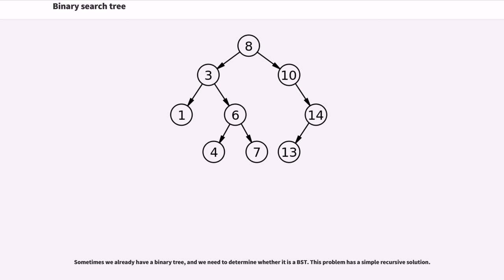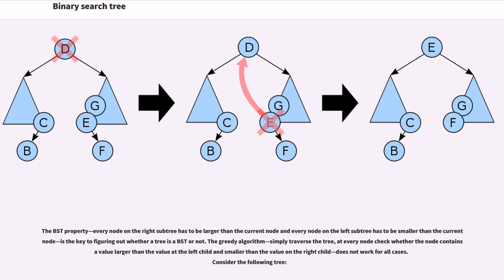Sometimes we already have a binary tree and we need to determine whether it is a BST. This problem has a simple recursive solution. The BST property, every node on the right subtree has to be larger than the current node and every node on the left subtree has to be smaller than the current node, is the key to figuring out whether a tree is a BST or not. The greedy algorithm, simply traverse the tree, at every node check whether the node contains a value larger than the value at the left child and smaller than the value on the right child, does not work for all cases.